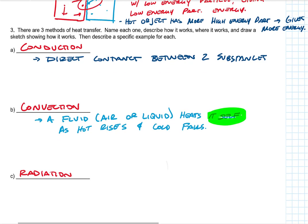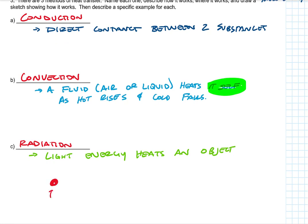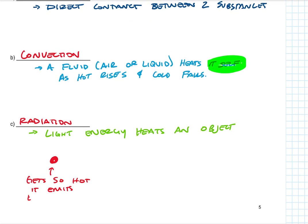Convection is how the water itself gets hot. And then radiation, this is light energy heats an object. And so what happens with this is you have something that gets so hot, it emits energy as light.